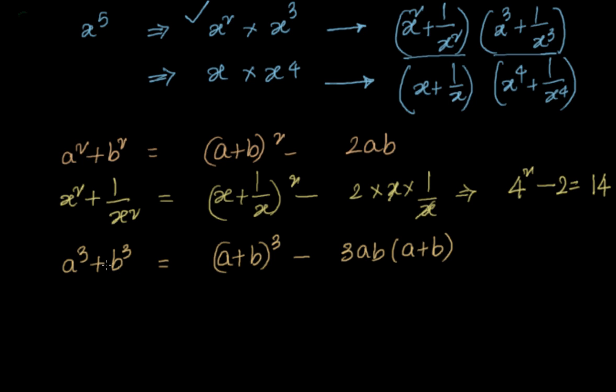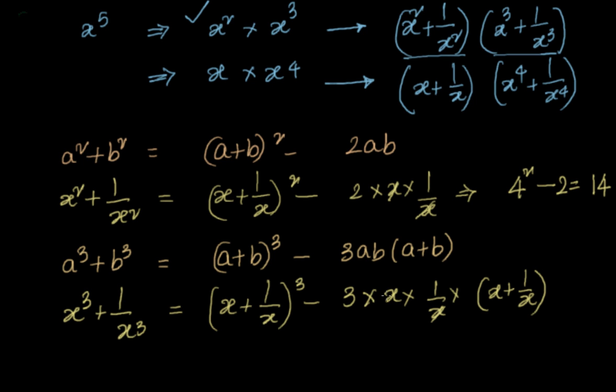Again here, a equal to x and b equal to 1 by x. So we substitute. We get x cube plus 1 by x cube equal to x plus 1 by x whole cube minus 3 into ab. ab is always 1 because x into 1 by x cancels. We will have x plus 1 by x, which is 4. So 4 cube minus 3 into 4, which is equal to 64 minus 12, that is equal to 52.